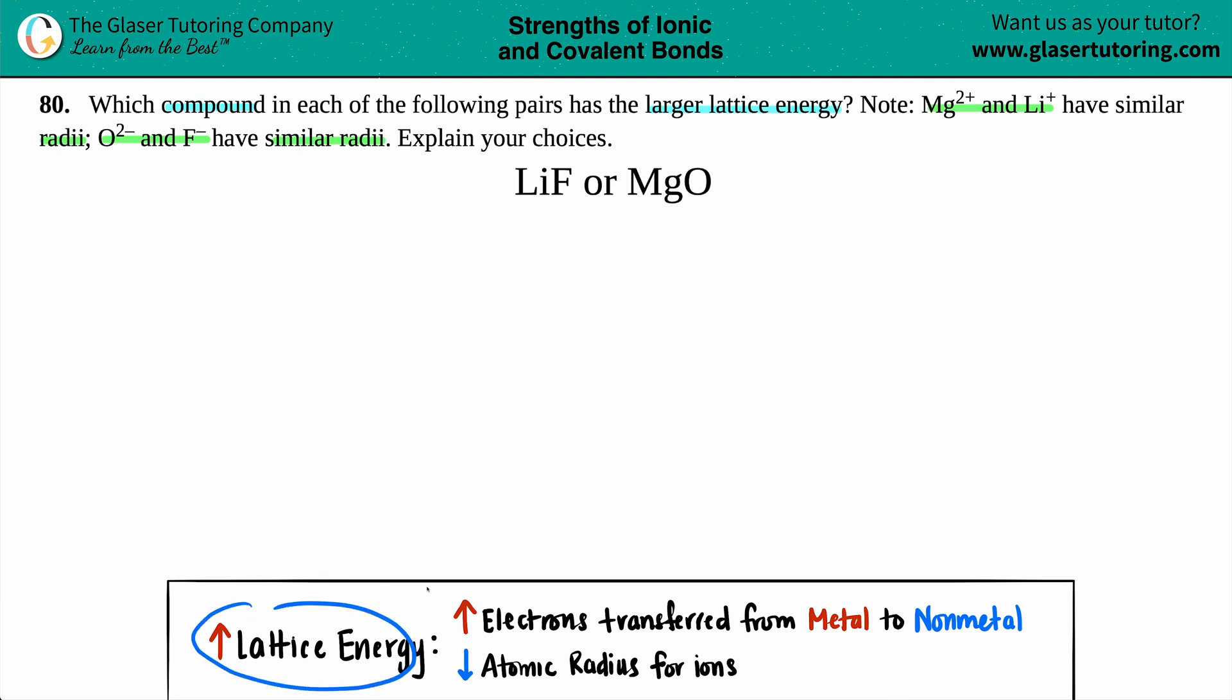Now, when we're talking about lattice energy, there are basically only two properties that determine whether an ionic compound will have a large lattice energy. This all comes from either the size of the ions in the ionic compound. If your atomic radii is much smaller for one compound than another, that will raise the lattice energy.